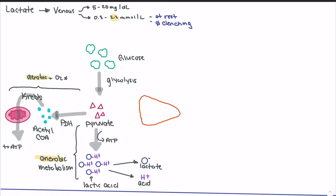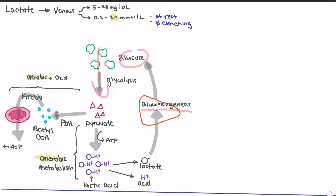Anaerobic metabolism isn't all bad if the liver is functioning. One process we use to eliminate lactate waste is that lactate can travel to the liver, which converts it back into glucose through gluconeogenesis — literally making new glucose. So lactate can be disposed of through gluconeogenesis and recycled back through the process. If we have an impairment somewhere in this process, that's how we end up with a raised lactate level.